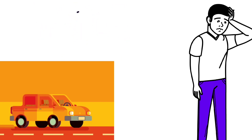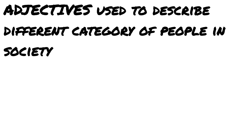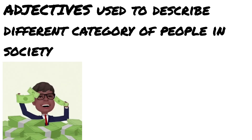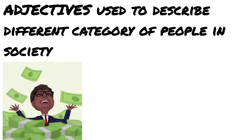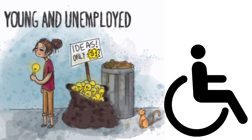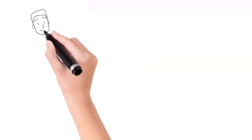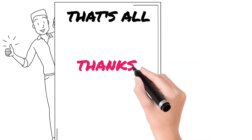Next, adjectives can be used to refer to a whole class of people. When we say 'the rich,' we mean all wealthy people in general. Examples of adjectives used as nouns: the rich, the poor, the blind, the unemployed, the handicapped, etc. This much for today. Wait for our next class, and thank you for watching our lesson.